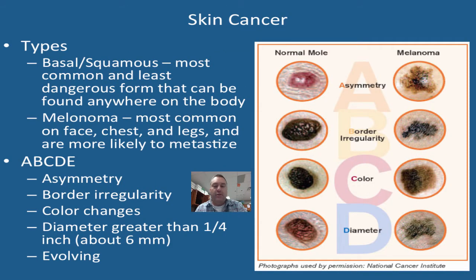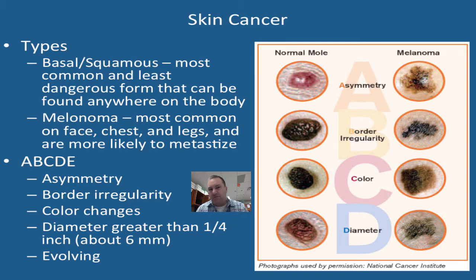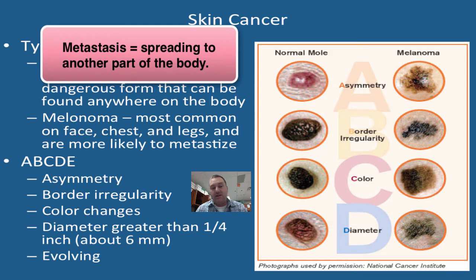When we were doing Project 3.2.2 and studying the effectiveness of sunscreens, we were also learning about skin cancer. Skin cancer comes in two main types. First is basal squamous cancer — this is the most common but also the least dangerous, and you can find it anywhere on your body. It can be surgically removed pretty well and you have a good prognosis. The other type is melanoma, most common on your face, chest, and legs, and it is much more likely to metastasize, making it a very dangerous type of skin cancer.